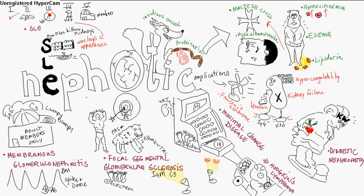Type three is focal proliferative. Type four is the diffuse form, and that's the one that causes the wire loop appearance. You can also get endothelial cell proliferation on electron microscopy, and on immunofluorescence, you get the subendothelial immune complex. Type five is the membranous form, similar to membranous glomerulonephritis, which we get to next.